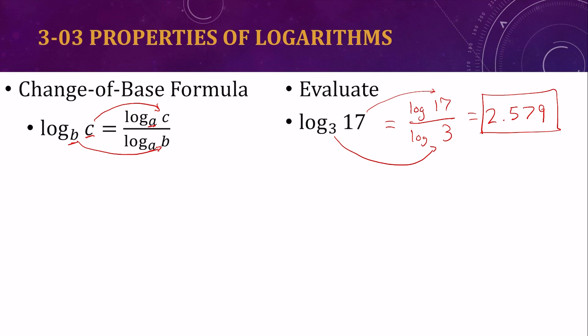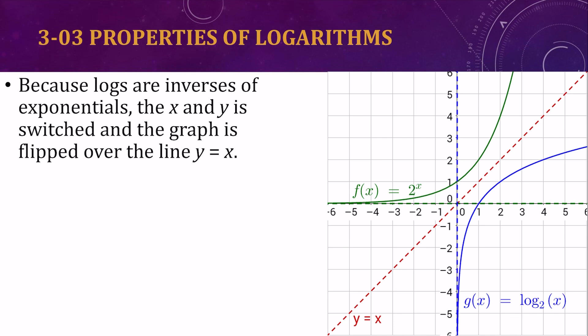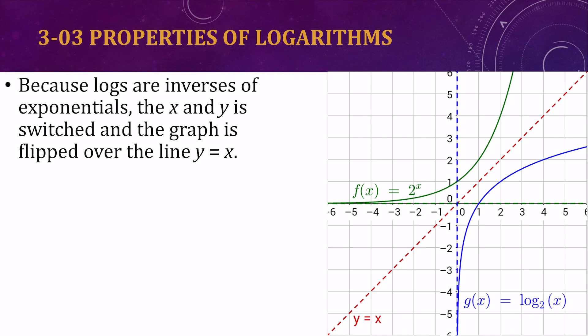This will be useful for graphing. So because the logarithms and exponentials are inverses of each other, their graphs are reflected over the line y equals x. So you can see the top graph here is 2 to the x. The blue one is log base 2 of x. The exponential and the inverse, the logarithm. They're inverses.